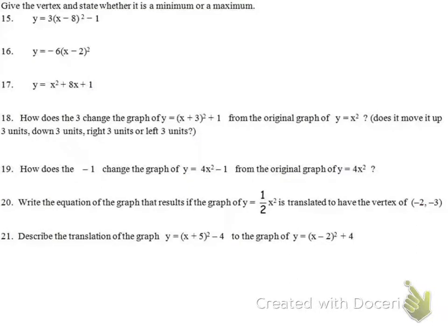For 15, 16, and 17, we need to find the vertex and state whether it's a maximum or minimum. For number 15, since it's in vertex form with x minus 8, our vertex is 8, negative 1. The coefficient out front is 3, so it opens up, meaning 8, negative 1 will be a minimum.